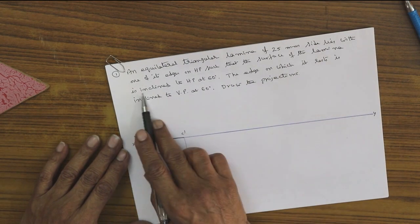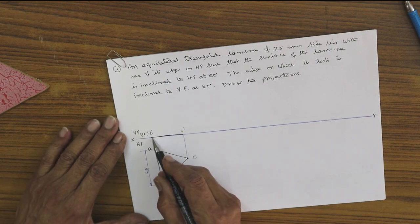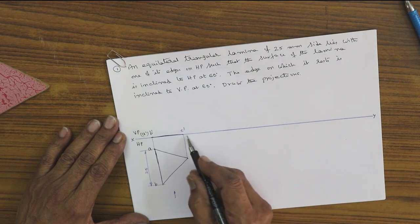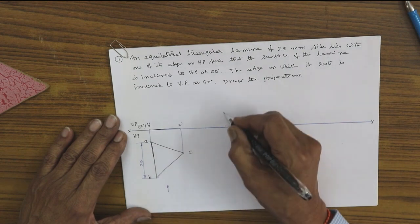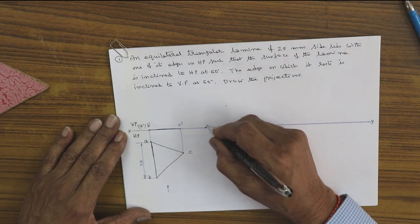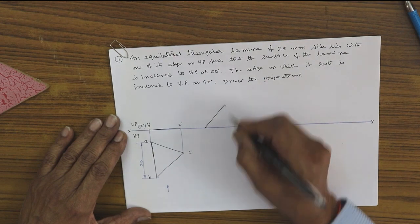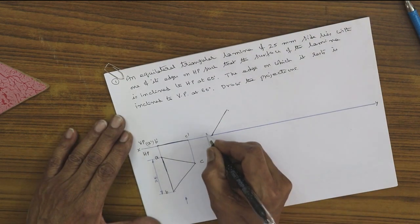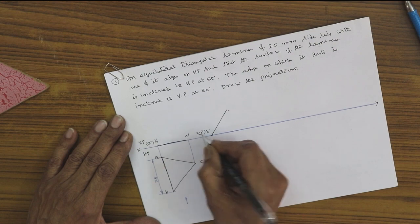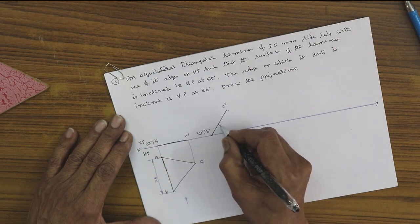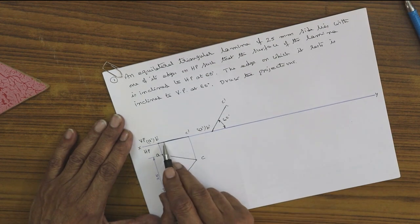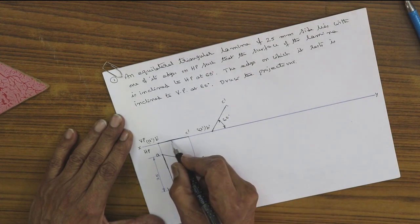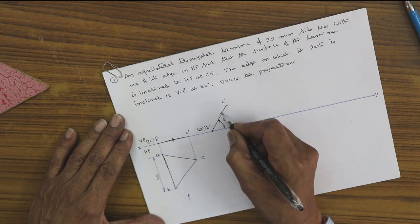The very first step is surface inclined to HP at 60 degrees. Make the front view inclined at an angle of 60 degrees, leaving a small gap. Measure B-dash C-dash and draw B-dash C-dash at an angle of 60 degrees. This gives B-dash here and A-dash/C-dash here at the 60-degree angle. When you redraw the front view, the length of the front view remains the same.